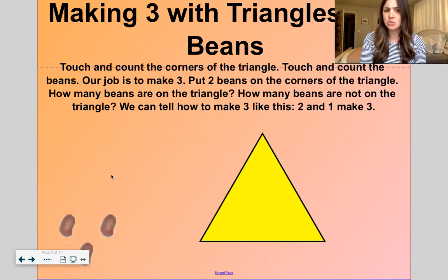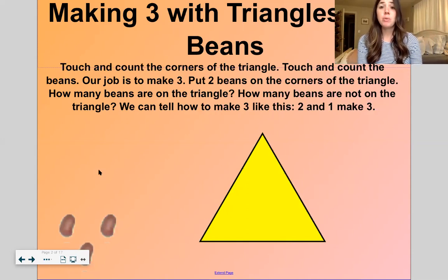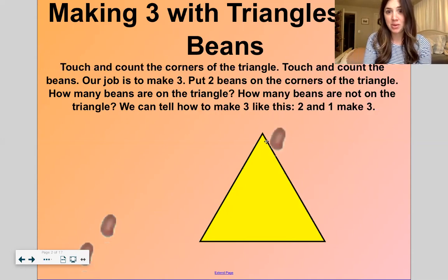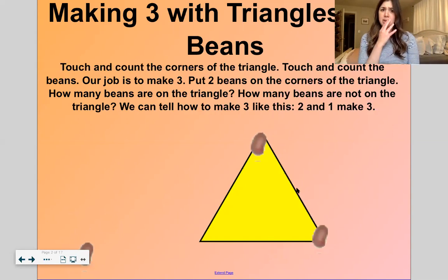So now I see these beans over here. These are kind of like maybe pinto beans or maybe lima beans. Maybe they look more like pinto or kidney beans, huh? So we want to put two of these beans on the corners of the triangle. Okay, ready? Count with me. One, two. How many beans are on the triangle? Show me. Two.